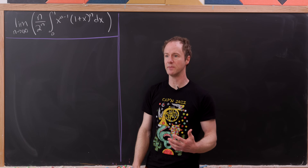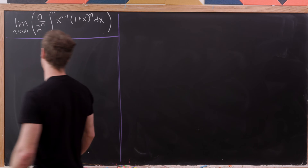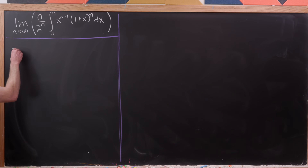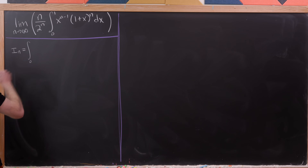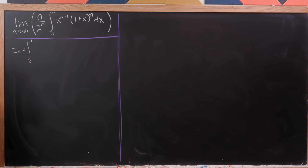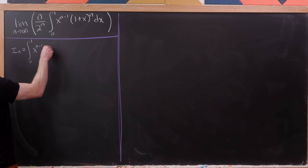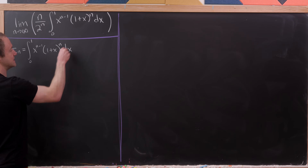We're going to get started by manipulating the integral portion of this. Let's take I sub n, which is what I will call the integral. So I sub n is the integral from 0 to 1 of x to the n minus 1 times 1 plus x to the n dx.